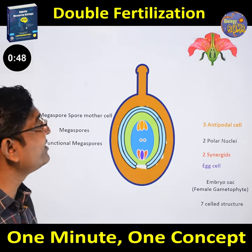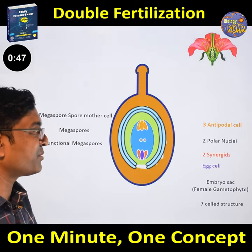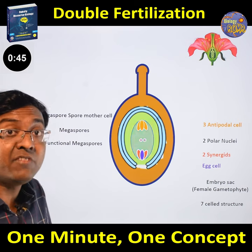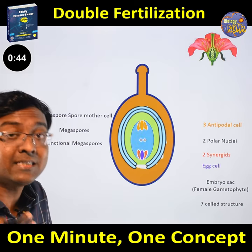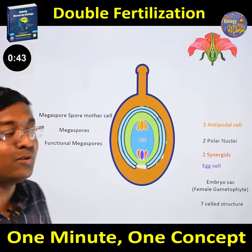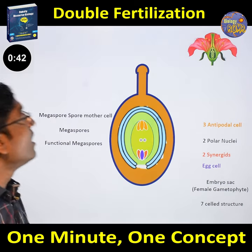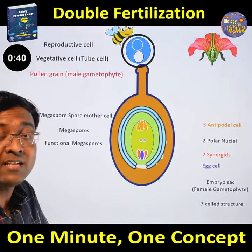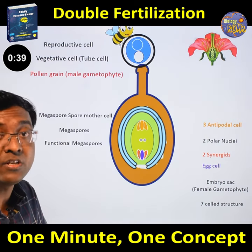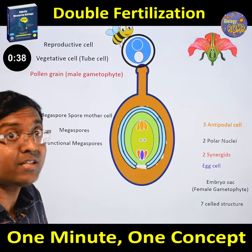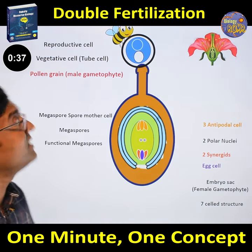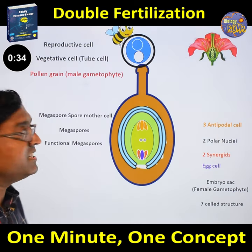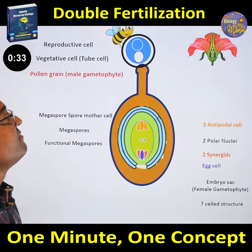The ovule is enclosed inside the ovary in the case of angiosperms. This is an embryo sac, which is a 7-celled, 8-nucleate structure. And here is the entry of a pollen grain, which is mostly a 2-celled structure, having one reproductive cell and another vegetative cell.